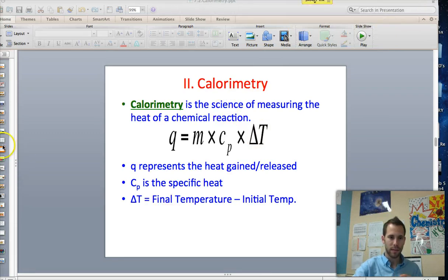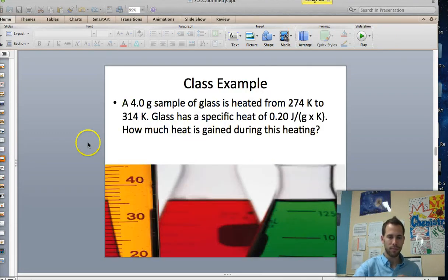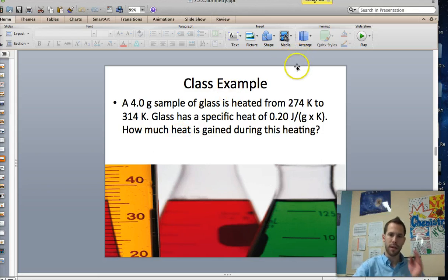Now what does a problem like that look like? Let's check it out. Say we have a 4 gram sample of glass heated from 274 Kelvin to 314 Kelvin. Glass has a specific heat of 0.20 joules per gram Kelvin. How much heat is gained during this heating?